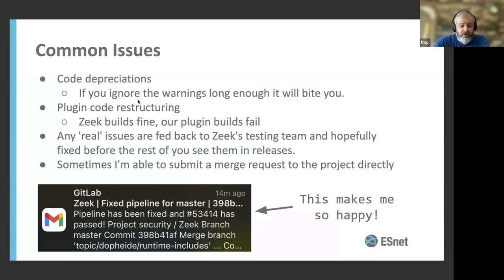I'm not a strong C++ coder by any means, but sometimes I'm able to submit a merge request to the project directly. The result — shown in the screenshot here — is I submitted a merge request, and then while I'm eating dinner or watching a movie in the evening, I get a text that the pipeline's been fixed hours later. I didn't do anything, and now things are working again.